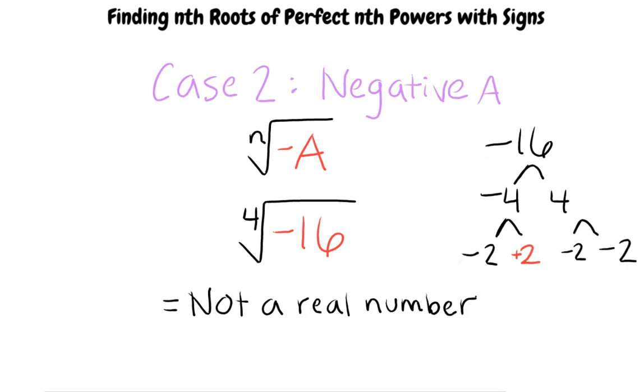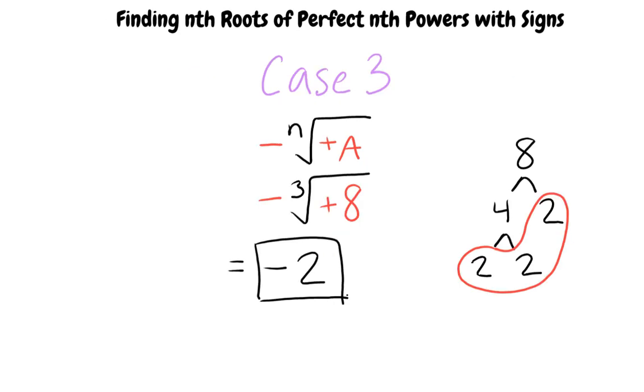Now, we want to look at what happens to the expression when there is a leading negative sign in front. In this case, we take what we had in the first case and add a negative sign in front of the entire radical. So the resulting number is a negative number because the solution of root 3 of positive 8 yields a positive 2. And with the negative sign in front, the answer becomes negative 2.